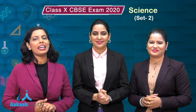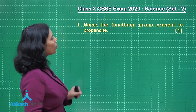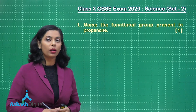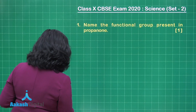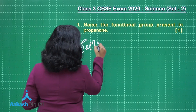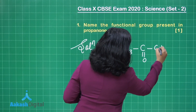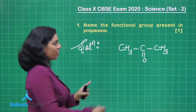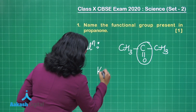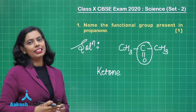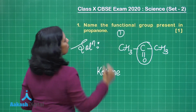We are here with set two of the paper and I will be dealing with the very first question that belongs to the chemistry section. Question number one asks: name the functional group present in propanone. This is a one-marker question. To solve this, you have to analyze which functional group is present. I am going to draw the structure of propanone, and here you can easily identify that the ketonic group is present. The functional group present in propanone is the ketonic group. Writing this answer will definitely get you one mark.